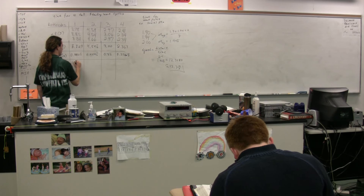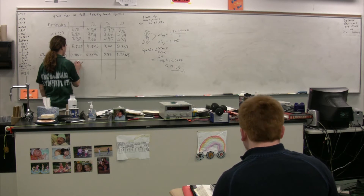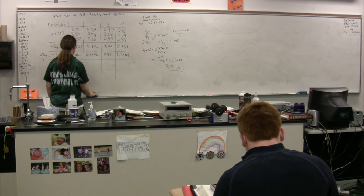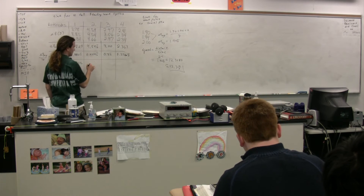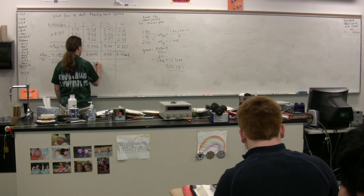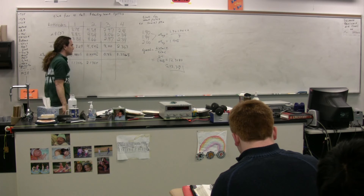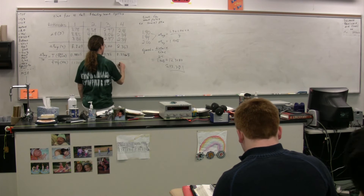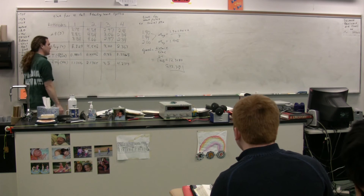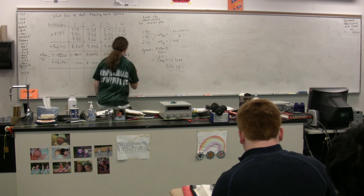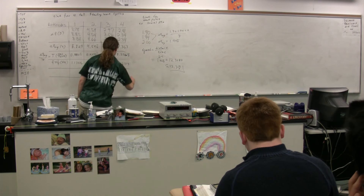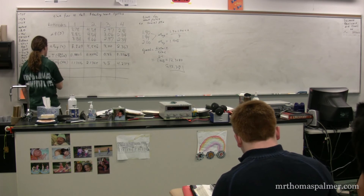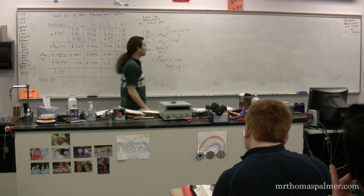1.13358 Hz for the first one. 2.17548 Hz for the next. The frequency in hertz — in order to figure out the velocity, we are going to use the equation velocity equals frequency times wavelength. That will give us the velocity in meters per second, but we do not have the wavelength yet. So we need to figure out the wavelength for each of these.